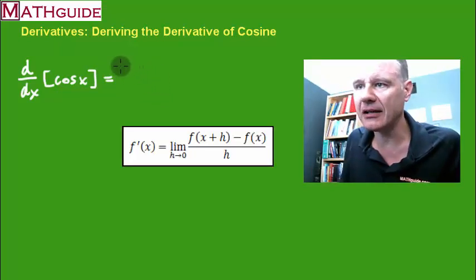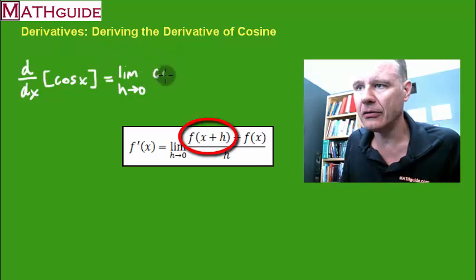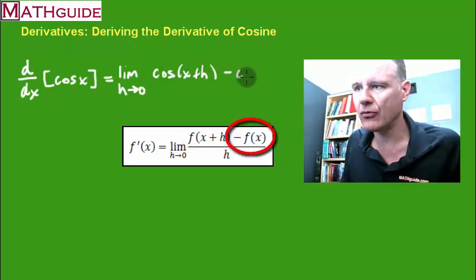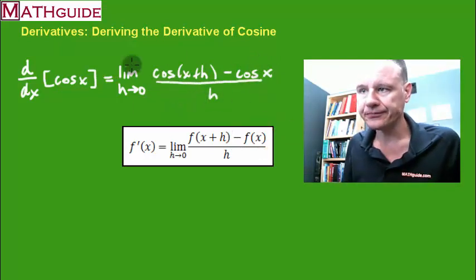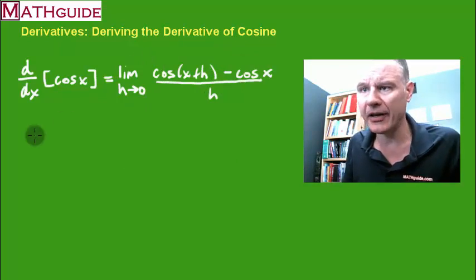Using the definition of derivative right there, I am going to say it is the limit as h approaches 0, and we replace the function with x plus h, and then we subtract the original function. This is how it goes with all derivatives, and we put the h in the denominator.